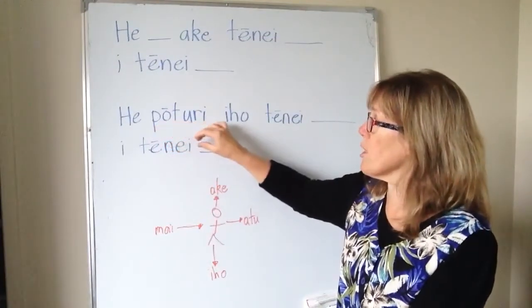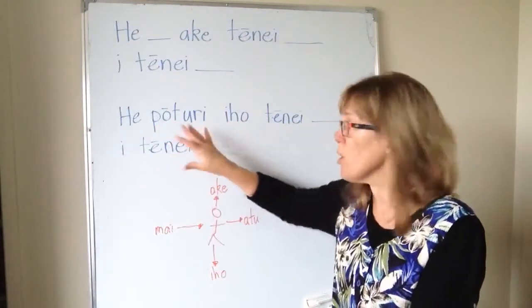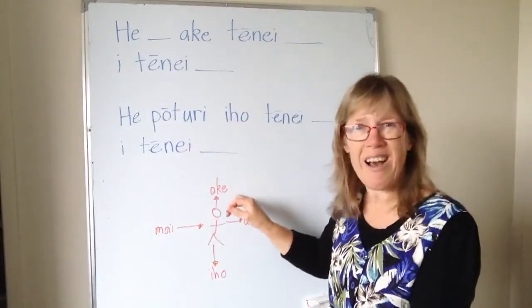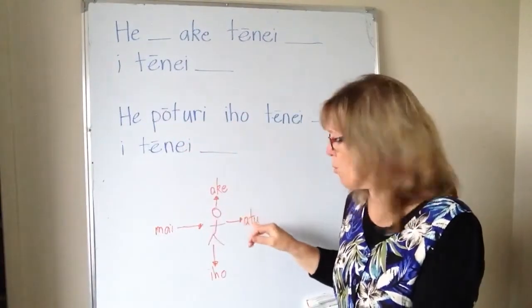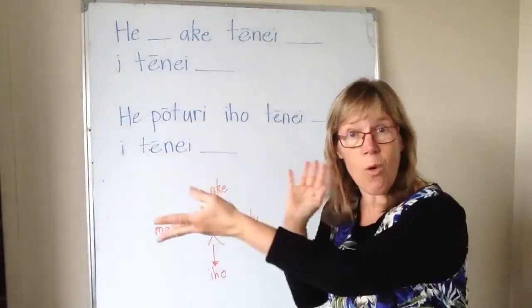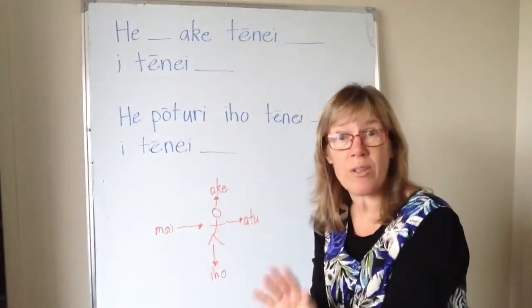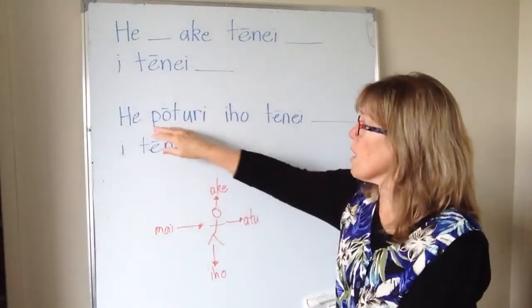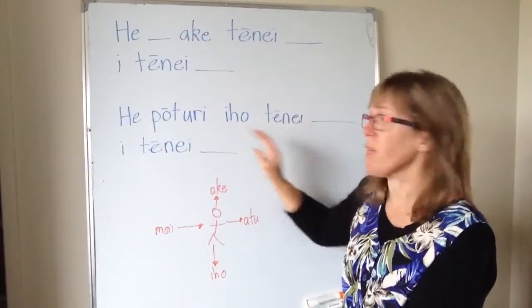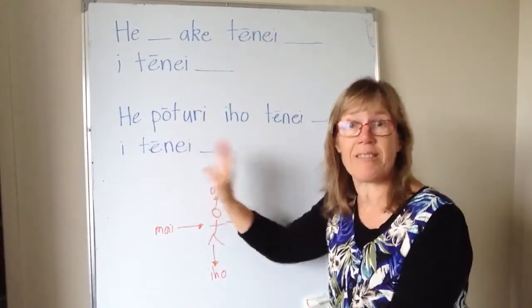For going iho — for something that's less — he pōtūri iho is my example here, because that's slow. So you wouldn't say pōtūri ake or pōtūri atu, because they're to do with more, and pōtūri means going slower — so slow. He pōtūri iho: this something is slower than this something.